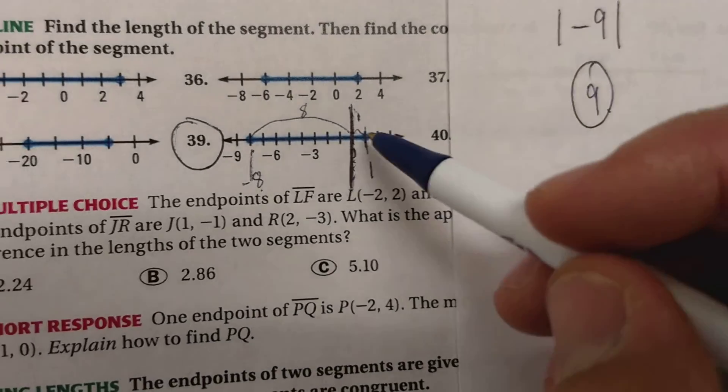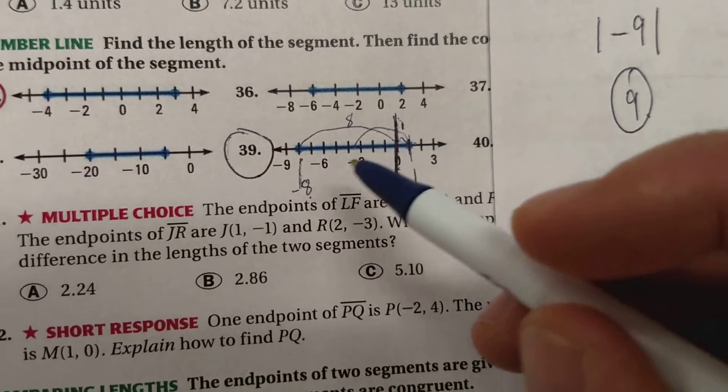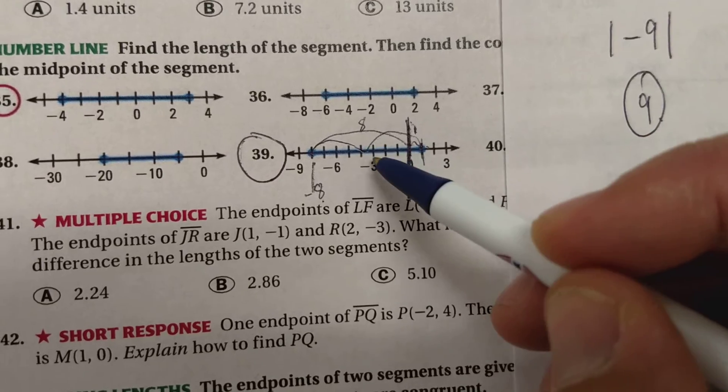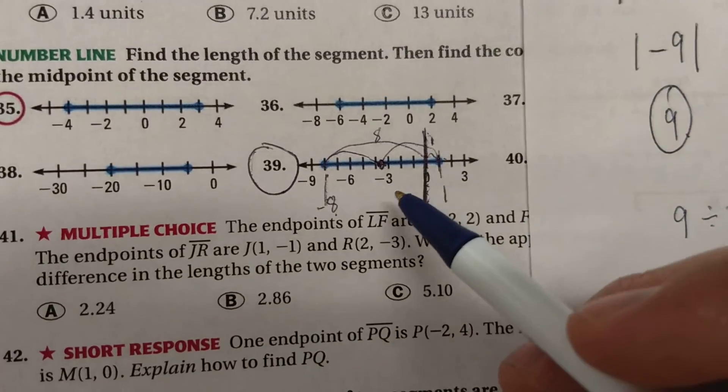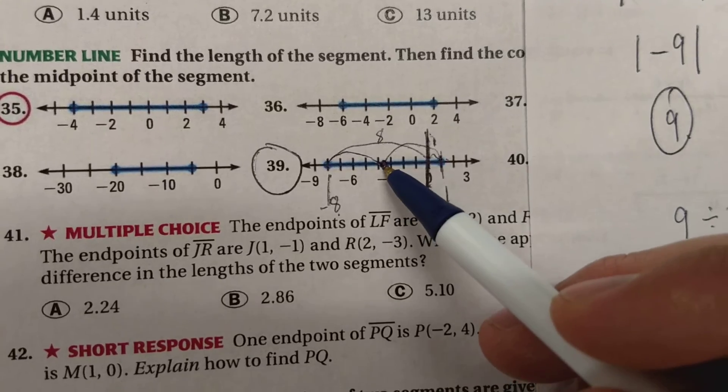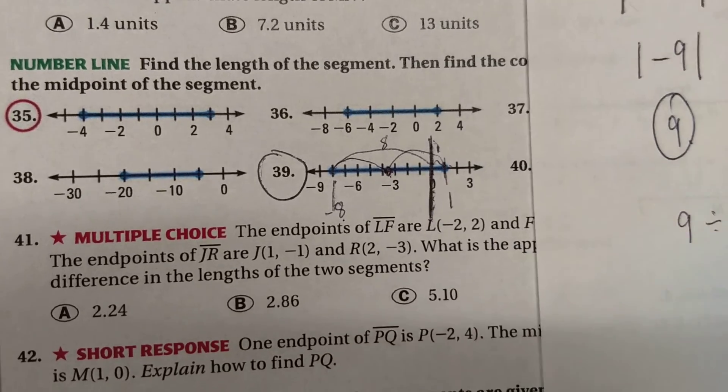So now I can take this, and I can either go back 4 1⁄2 from this point, or I can go up 4 1⁄2 from this point, and either way, you're going to end right there at negative 3 1⁄2. Negative 3 1⁄2 happens to be the midpoint of this segment.